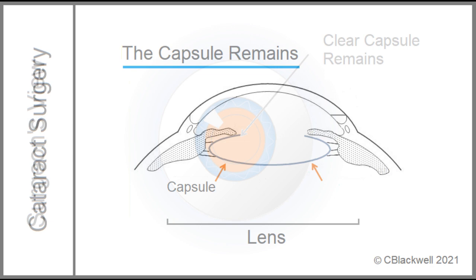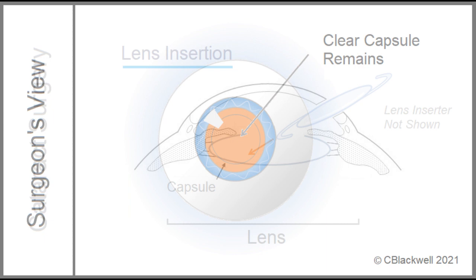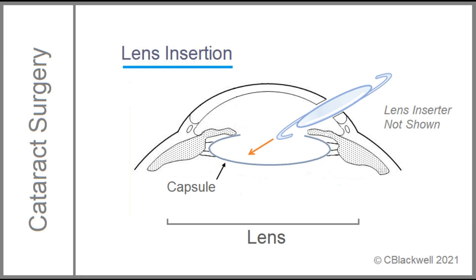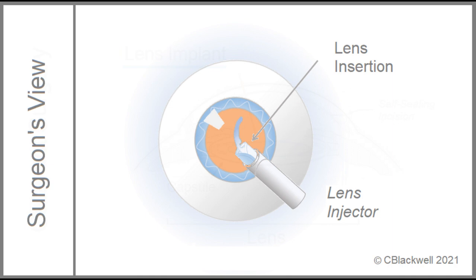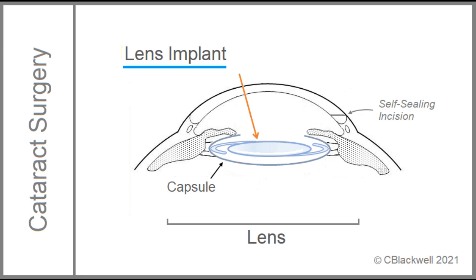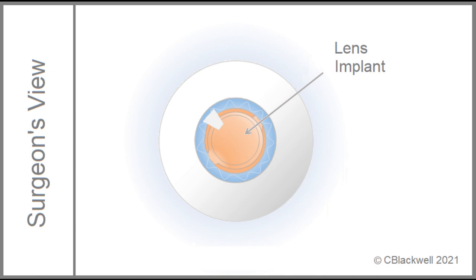With the cataract out, everything is clear with a nice orange reflex. Part three: through the same opening, the lens implant is inserted into the eye. This is the surgeon's view of the lens implant emerging from the injector. The lens is maneuvered into the capsular bag and centered. It may surprise you to know the incision is self-sealing — no stitches are needed. The inner flap is held closed by the pressure of fluid inside the eye.